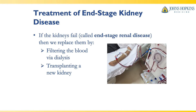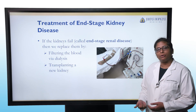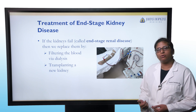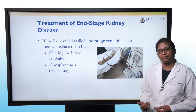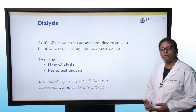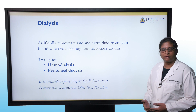This section is going to focus on treatment of end-stage kidney disease. When the kidneys fail, we call it end-stage renal disease or end-stage kidney disease. We have two options for replacing kidney function: either we can filter the blood via dialysis, or we can transplant a new kidney. This presentation will not focus on transplant — that will be a different presentation. Dialysis is a term for artificially removing waste and extra fluid from the blood when our kidneys can no longer do this. There are two major types: hemodialysis and peritoneal dialysis.